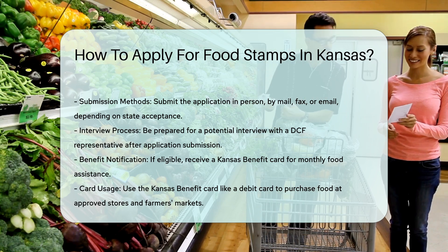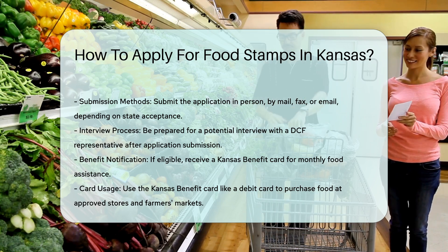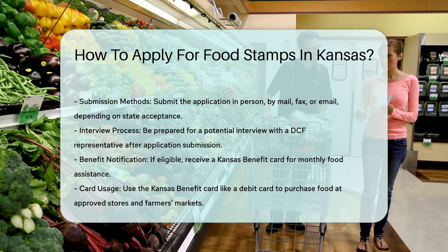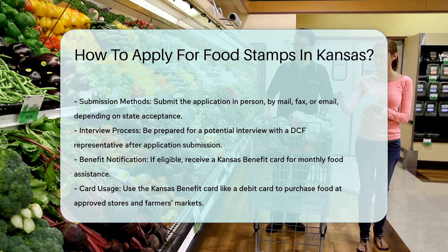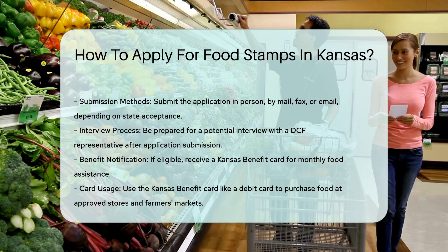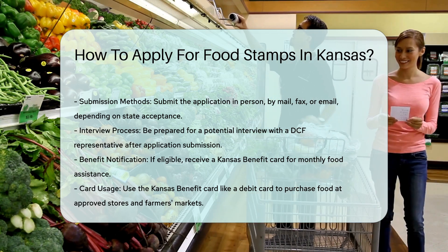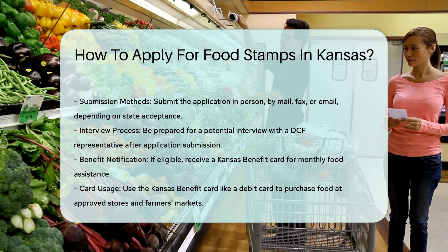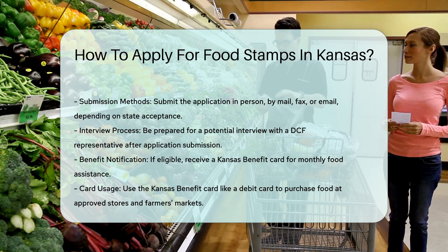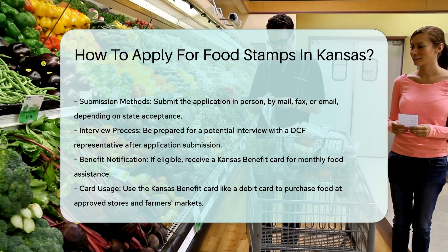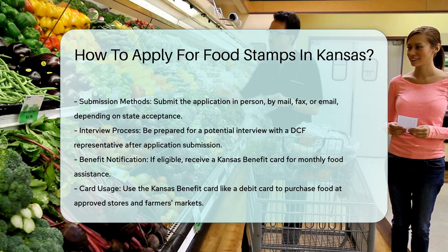Step 7: Receive your benefits. If you are eligible, you will receive a Kansas benefit card, which functions like a debit card. Monthly benefits will be added to this card, and you can use it to purchase food at participating stores and farmers markets.